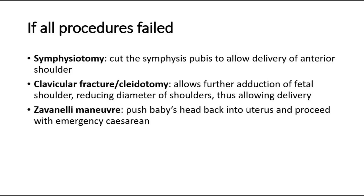If all procedures fail, there are still some last-resort methods. These include symphysiotomy, by cutting the symphysis pubis to allow delivery of the anterior shoulder; clavicular fracture or cladotomy, which allows further adduction of the fetal shoulder to reduce the diameter and allow delivery; and also the Zavanelli maneuver, where the baby's head is pushed back into the uterus and an emergency caesarean section is performed.